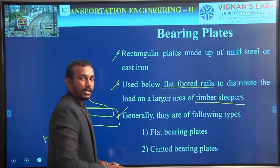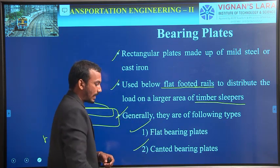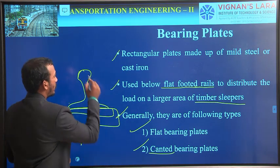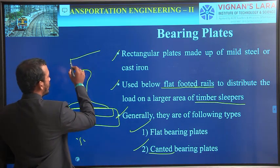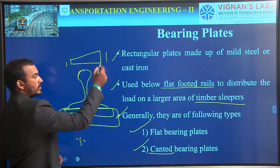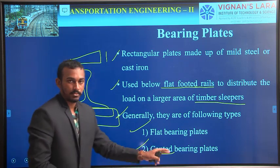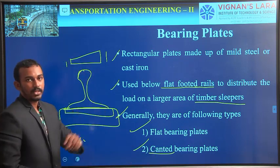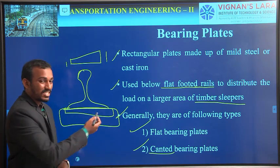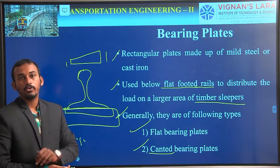Generally, bearing plates are of two types. The first one is flat bearing plates. The second one is canted — canted means with some slope. One edge may be thick and the other edge may be thin — that type of bearing plate is known as a canted bearing plate. So why do we use canted bearing plates? To provide a tilting of the rail. If we do not provide urging of sleepers, then we use bearing plates to tilt the rails to a slope of 1 in 20.